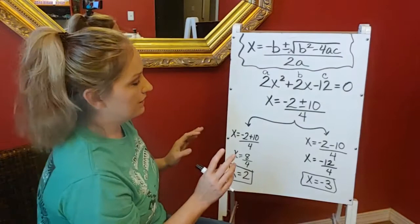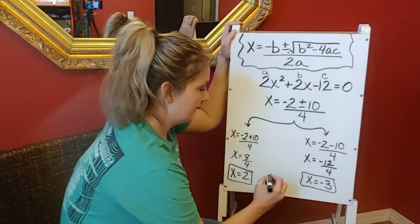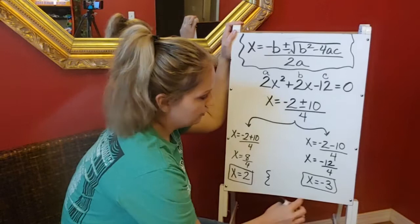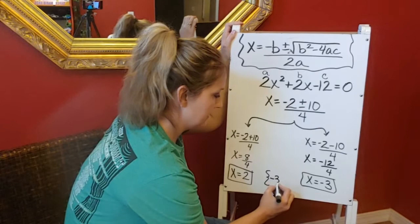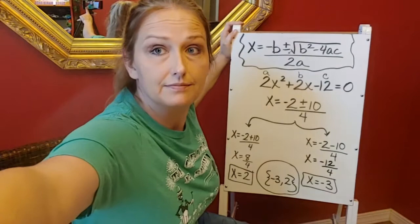So this quadratic crosses the x-axis at 2 and at negative 3. When we write this as a solution set, we put the smallest x-intercept first. So it would cross at negative 3 first, and then at 2. The solution set written in brackets is {-3, 2}.